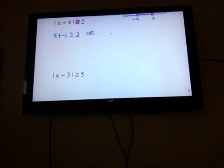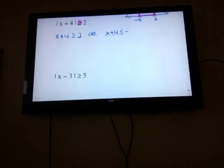So a greater is an or. And then case two has two switches. The direction of the symbol and the sign of the number. Case two, two switches.